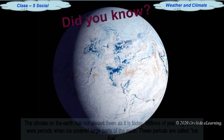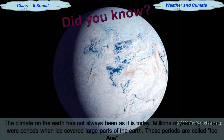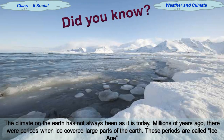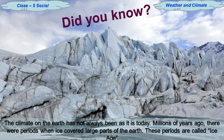Did you know? The climate on the earth has not always been as it is today. Millions of years ago, there were periods when ice covered large parts of the earth. These periods are called ice ages.